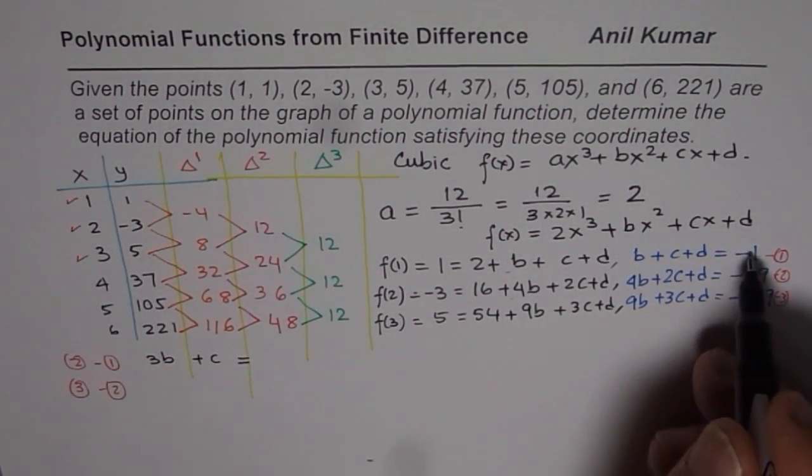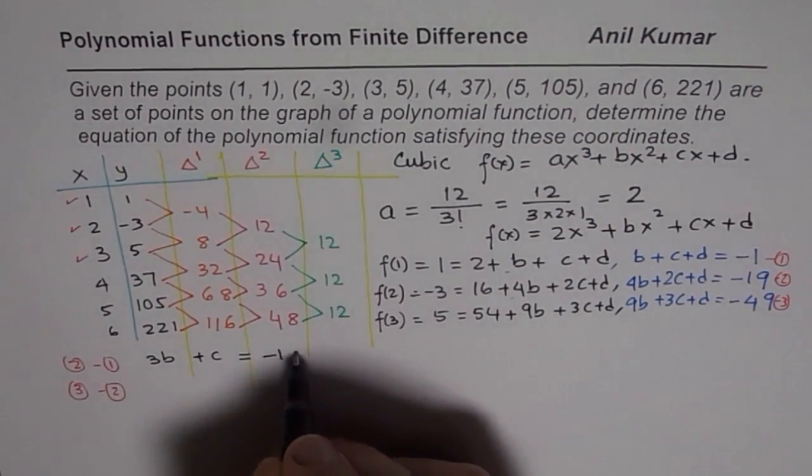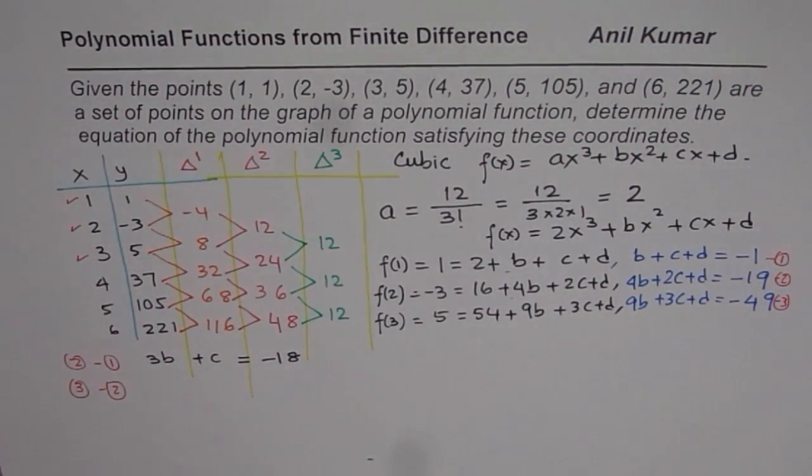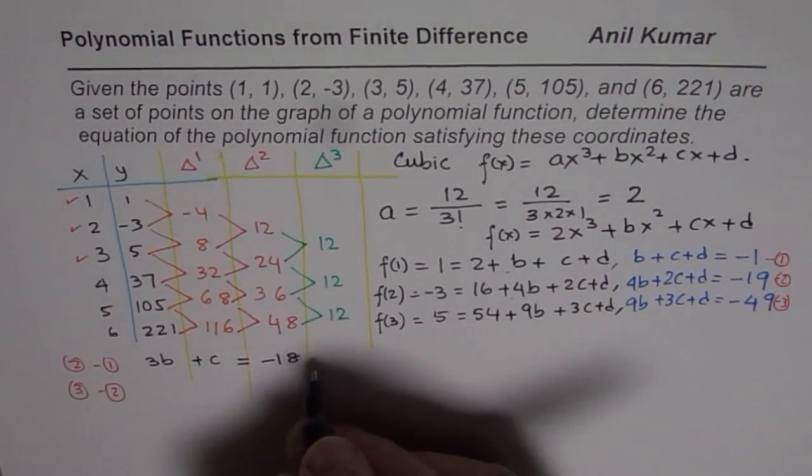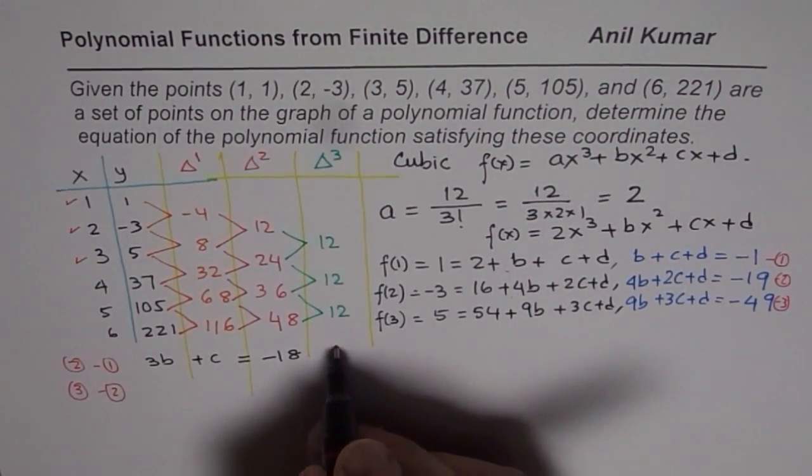We get 3b, 2c minus c is plus c equals -19 minus -1 gives us -18. So that is our equation number 4.